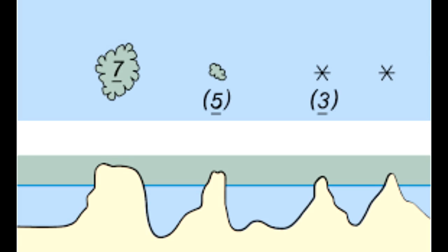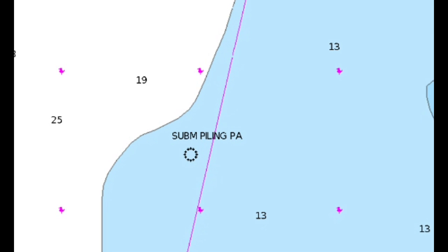Of course, there are always rocks somewhere. Here's an idea of how that looks from the side, what it looks like on the chart, and a picture to show how it could appear on the bottom surface. Submerged items may or may not have a depth next to them — usually it's an old piling or something like that — and you'll find them primarily near shore or shoal areas.